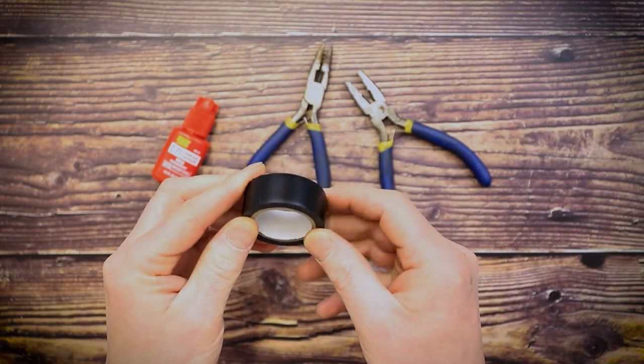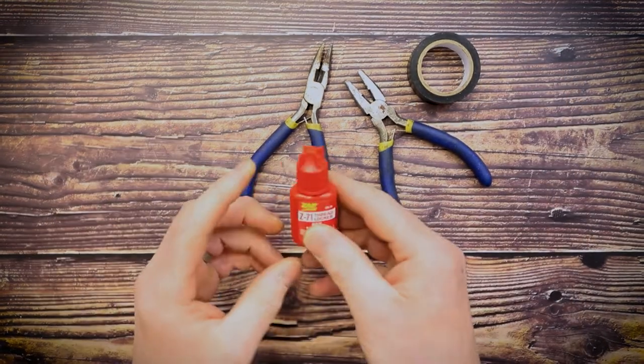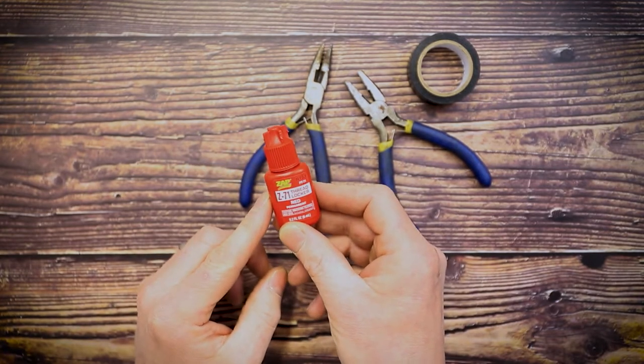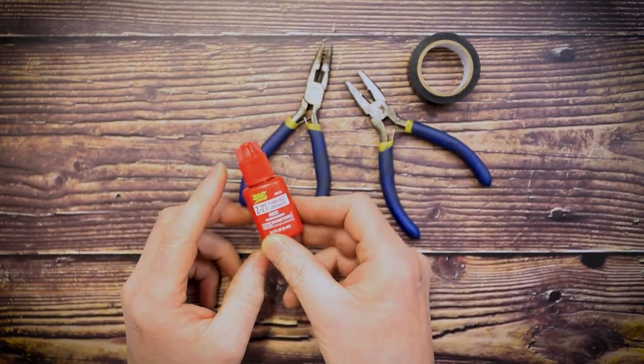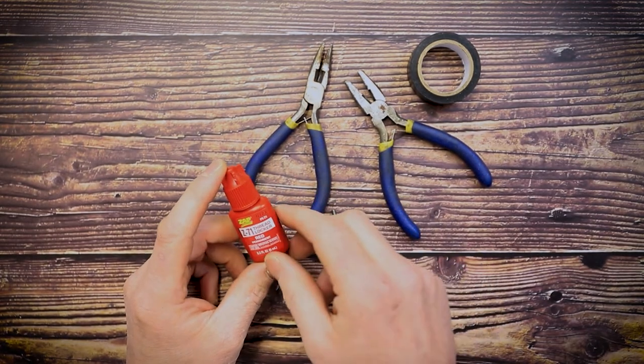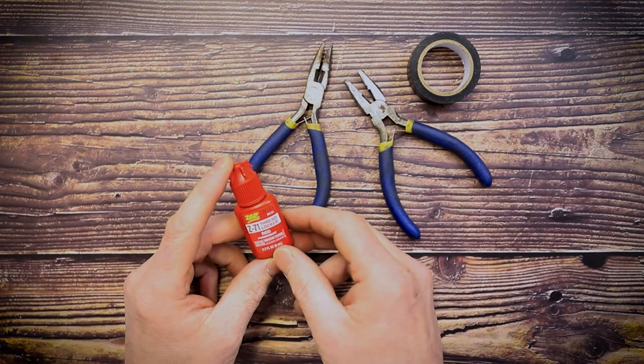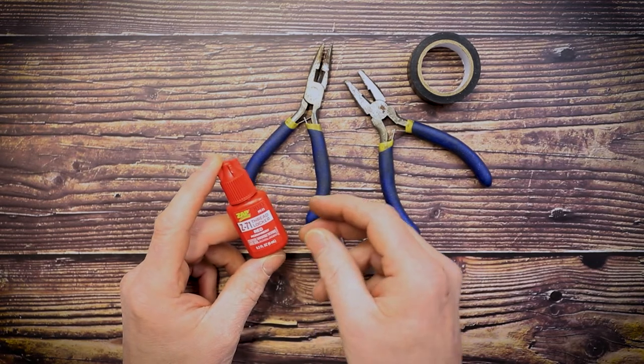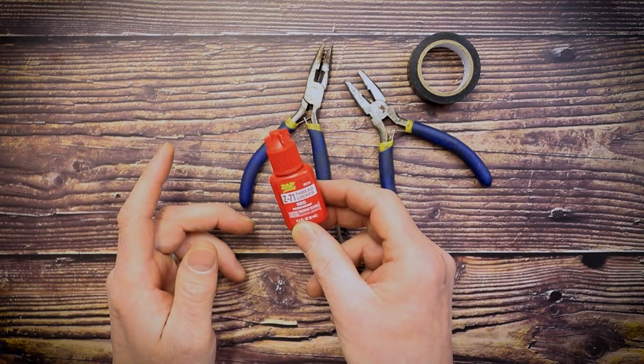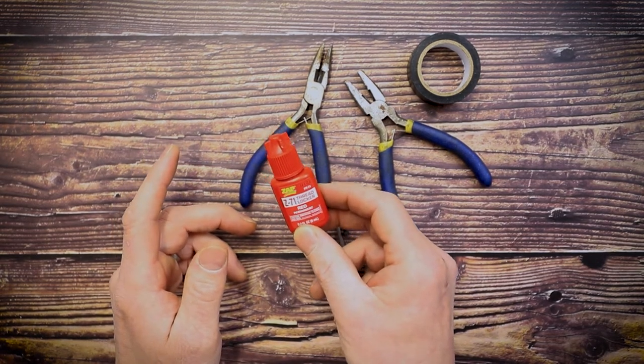You also need some electrician's tape and some thread locker. This thread locker is called Z71. We stock this at Animation Toolkit, so check out the links below. Z71 is a permanent thread locker. It's red in color, which means that once you've thread locked your parts together, hopefully they are never going to come apart.